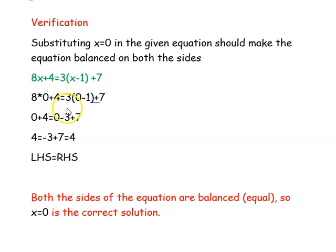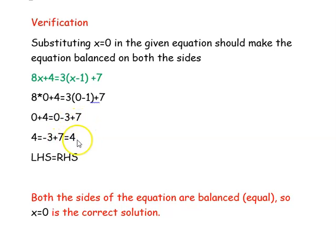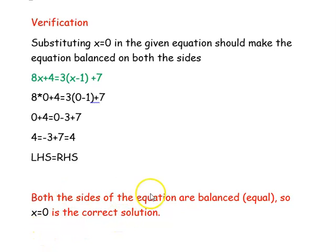8 into 0 is 0, so left hand side is 0 plus 4 equal to 4. On the right hand side: 3 into 0 is 0, and 3 into minus 1 is minus 3, so 0 minus 3 plus 7 is 4. So 4 equal to 4. Left hand side equals right hand side, the equation is balanced, and x equal to 0 is the correct solution.